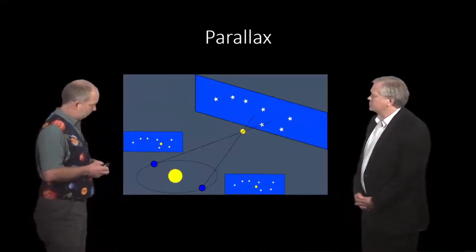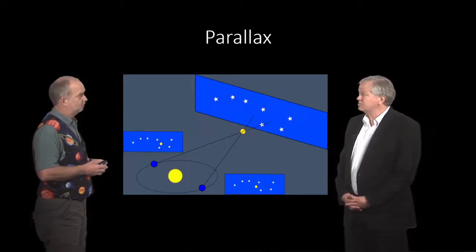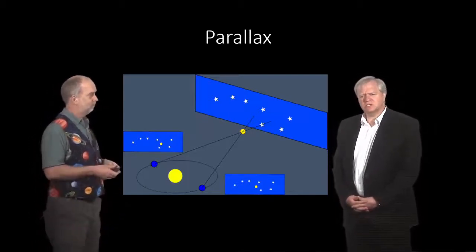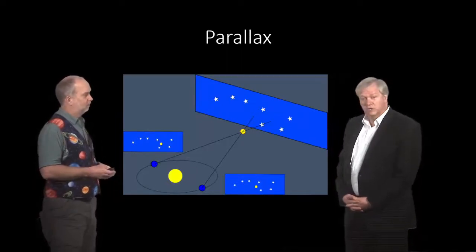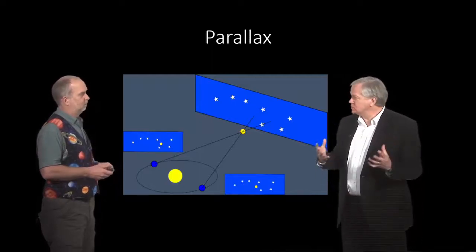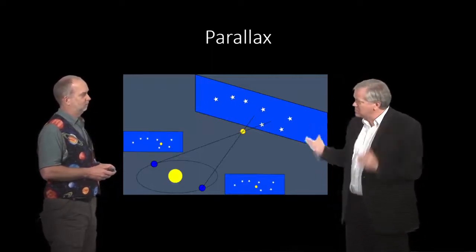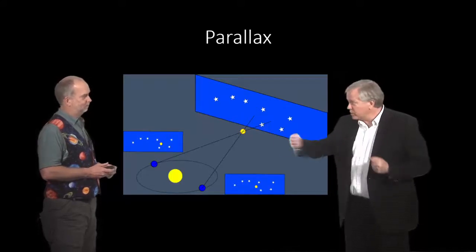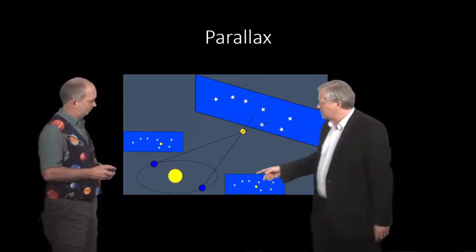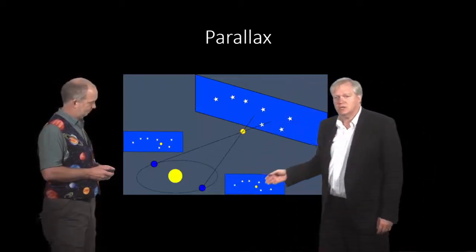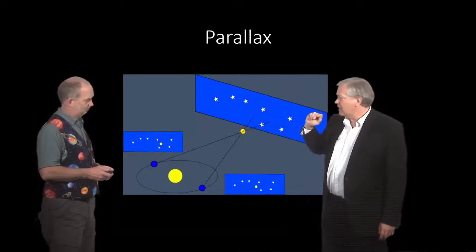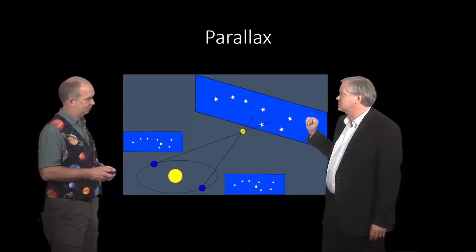Right, so parallax is very useful because it is a method based purely on geometry. And that's useful because you're going to be able to measure a distance which you understand really well. And the distance is going to be what we would call absolute. It's going to be something we measure in meters. It's going to be like a real ruler. So it's very useful. And it essentially is just taking the motion of the earth around the sun and the fact that it causes an angular motion of distant stars relative to even more distant stars.